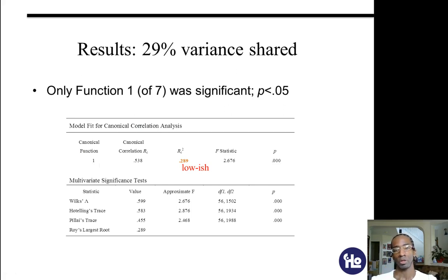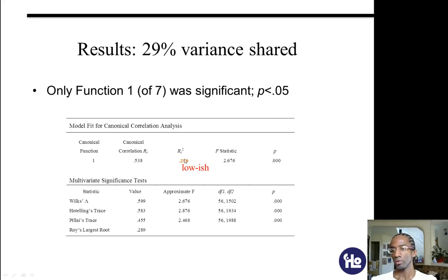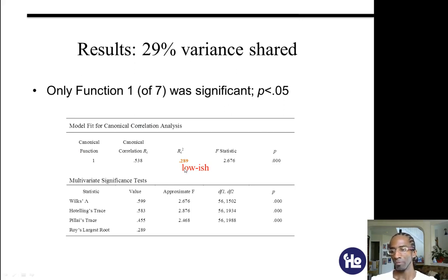Here's what some of the reporting looks like for canonical correlation. You will have statistics for each of your canonical functions. When I ran this analysis, only canonical function 1 was statistically significant at p less than 0.05 — here the p is 0.00 and the F statistic was 2.7. The canonical correlation itself, R sub c squared, is 0.289, so the variables only explained about 29 percent of the relationship between set A and set B.